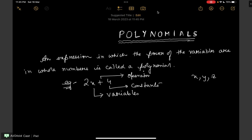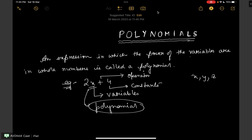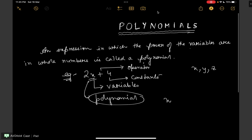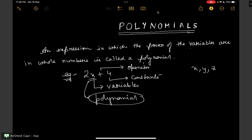Now here 2x plus 4 can be called as a polynomial. Why? Because the power of the variables are in whole numbers. The variable here is x, and the power of x is 1 — since nothing is written above x, the power is taken as 1. So 2x plus 4 is a polynomial because 1 is a whole number.